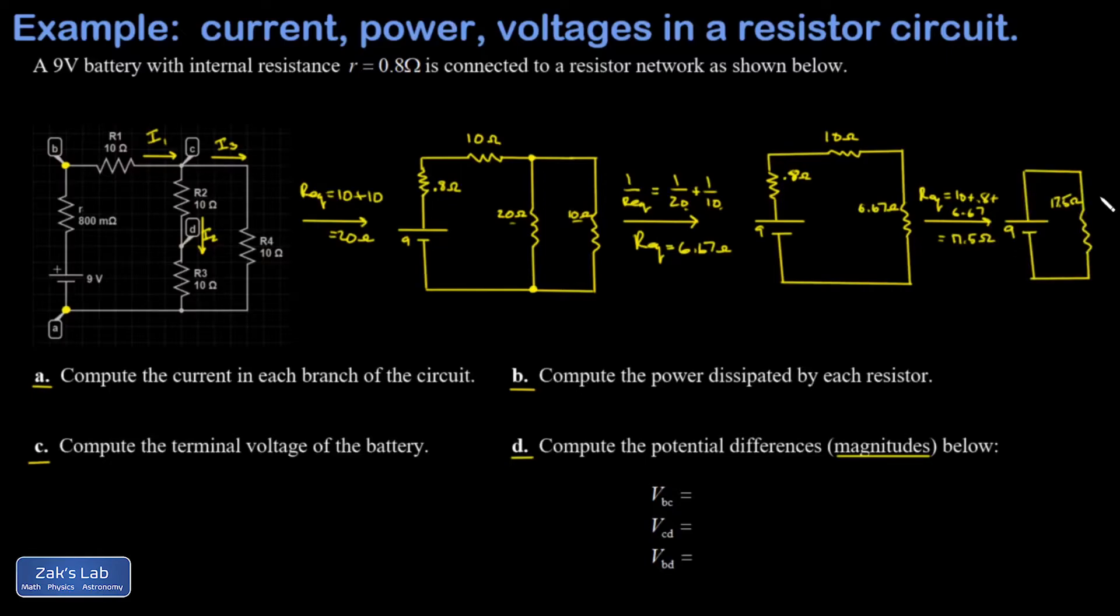Now that the circuit has been simplified all the way down to the simplest possible circuit with just one battery and one resistor, we can find the total current in the circuit. And this is the moment where we begin working backwards through the circuit. So I get I total, that's going to be V over R, as a voltage of 9 volts across a 17.5 ohm equivalent resistance. And I get 0.514 amps for that current.